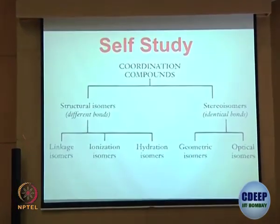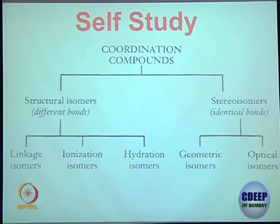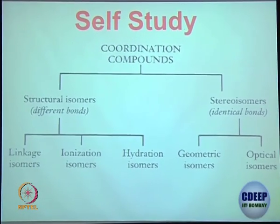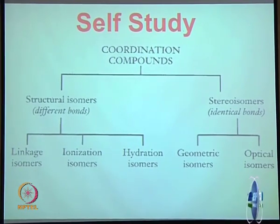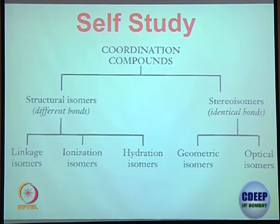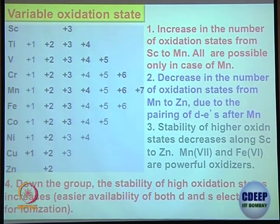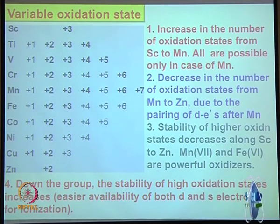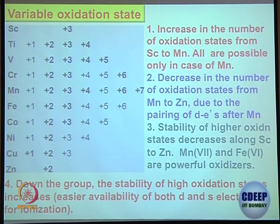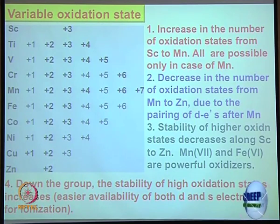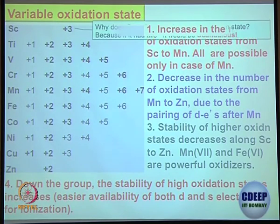For self-study: isomerism in coordination complexes is covered in your model — study about the different types of isomers; one or possibly two questions may be expected from this part. Also, variable oxidation state was briefly discussed in the first class. From scandium to manganese, variable oxidation state increases up to 7 and then decreases further. Going down in the periodic table, higher oxidation states become more stabilized.